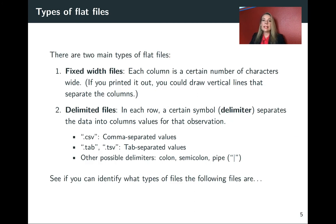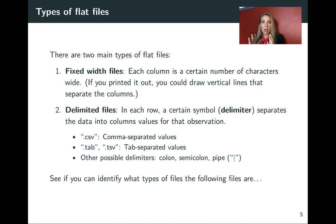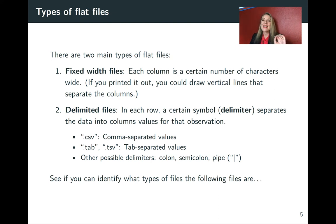There are two main types of flat files. One is called a fixed width format — when you open it up, it already looks like a table with separate columns. For these, you tell the computer how wide each column is, and then the computer is able to read that in. The other type are called delimited files. In these, there's a certain symbol called a delimiter that tells the computer where the break is between each of the separate columns as it goes across.